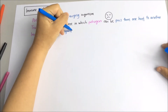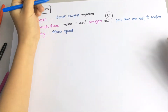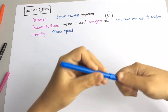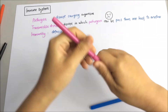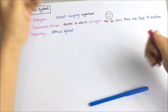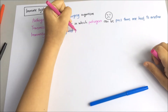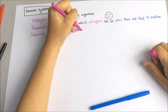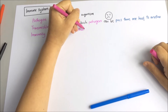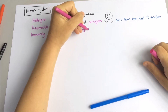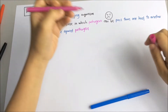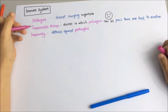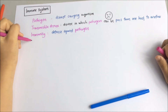The third term that you have to know is immunity. Immunity is the body's defense against pathogens. Humans are constantly invaded by disease-causing microorganisms or pathogens. A healthy body is able to protect itself from these pathogens because of our immune system.